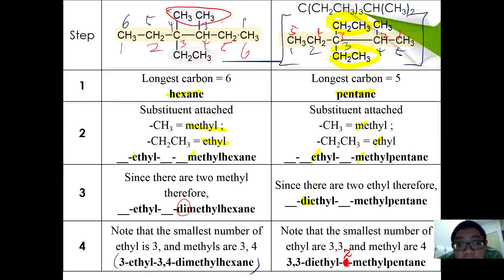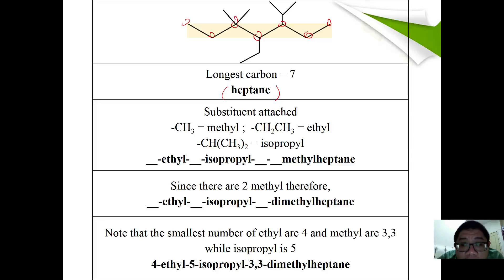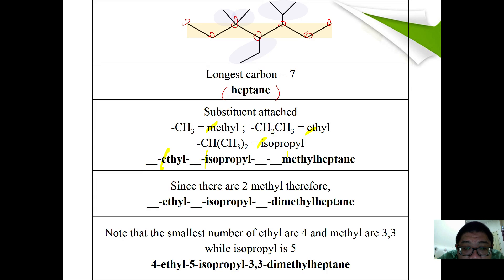Now let's look at an example using a skeletal formula. You need to find the longest carbon chain — here it is seven carbons, so the parent chain is heptane. Remember that each vertex in a skeletal formula represents one carbon. The substituents are an isopropyl, a methyl, and an ethyl. In alphabetical order: ethyl first, then isopropyl, then methyl. Since there are two methyl groups, we apply the prefix 'di'.